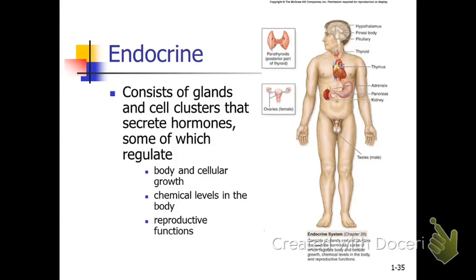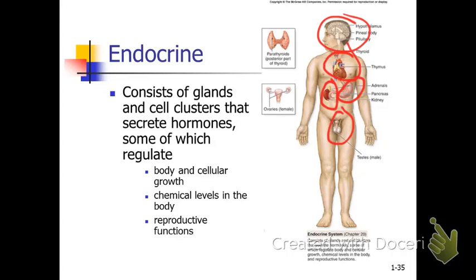The endocrine system is a series of glands that secrete — 'endo' meaning within, 'crin' meaning to secrete. So the endocrine system is a series of hormone-secreting glands. If you look at this image too quickly, you might just see the brain and say nervous system, or see the heart and say cardiovascular, or the stomach and say digestive, or a kidney and say urinary, or the testes and say reproductive. But collectively, all of those glands are hormone-secreting, so collectively this is the endocrine system.